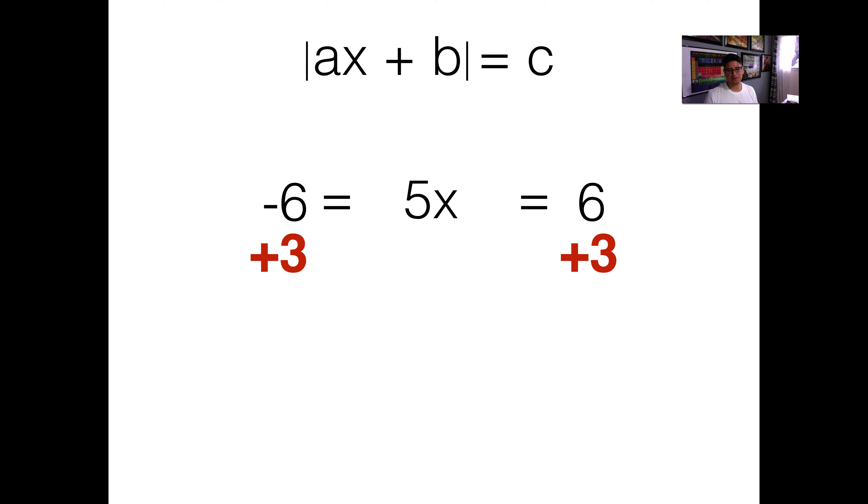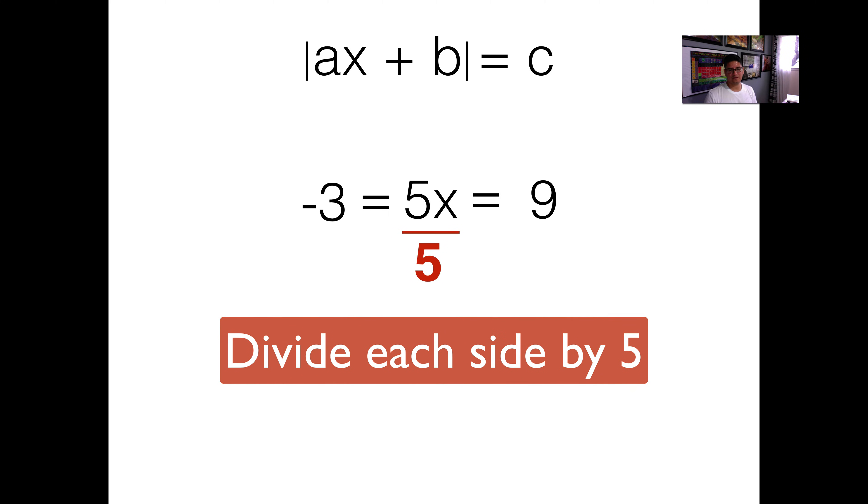I'm left with 5x in the middle, and then on the right, I'm left with 9, and then negative 3 on the left. So this is my new equation. Now I just need to divide by 5. I can divide by 5 on both sides.